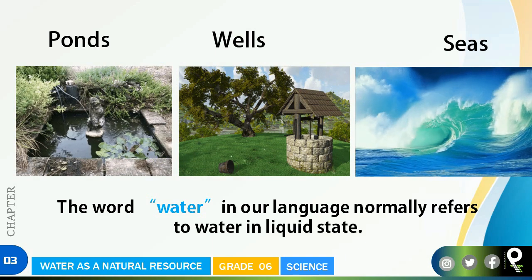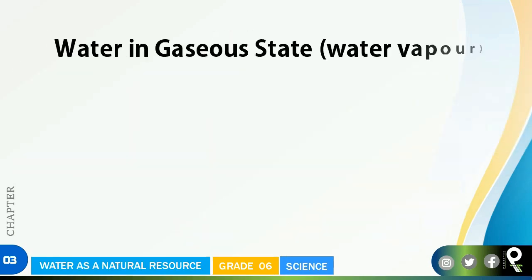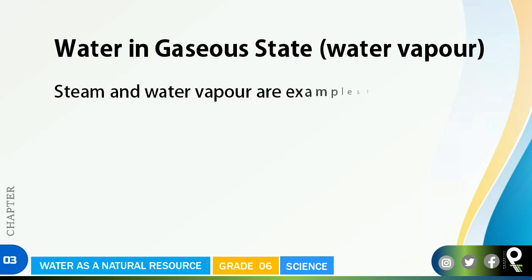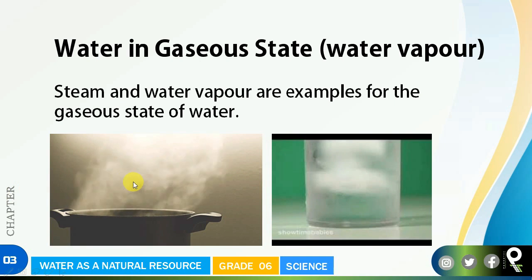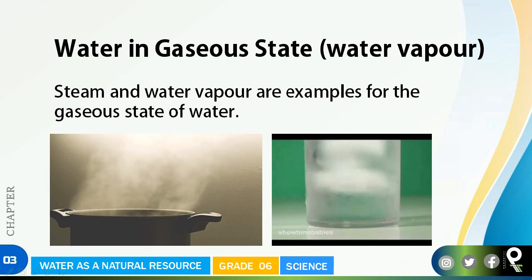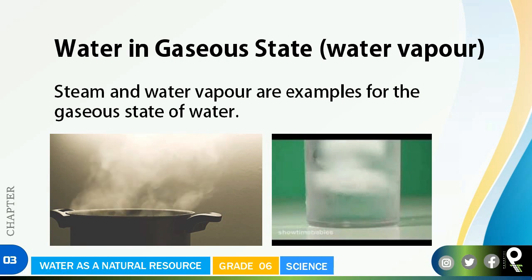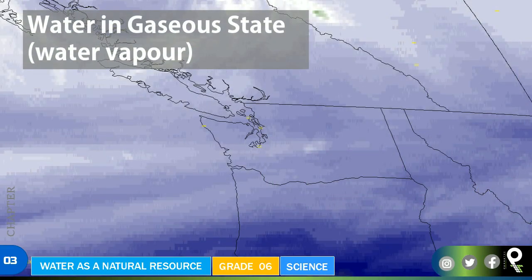These are some of the liquid states of water. The word 'water' in our language normally refers to water in liquid state, but there is also solid water and gas. Now let's see water in gaseous states — water vapor and steam are examples. You can see that steam going away from a boiling pot, and water vapor appearing on the outside of a cold glass. If you touch it, cold water will come to your hand.